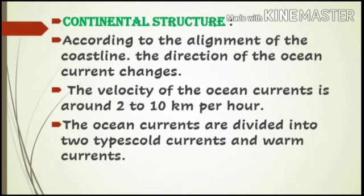One more reason for ocean currents is continental structure — meaning the structure of the land. The land is not even at all places, and under water too, according to the alignment of the coastline the direction of the ocean current changes. The velocity of ocean currents is 2 to 10 kilometers per hour — meaning in one hour an ocean current can travel up to 2 to 10 kilometers.